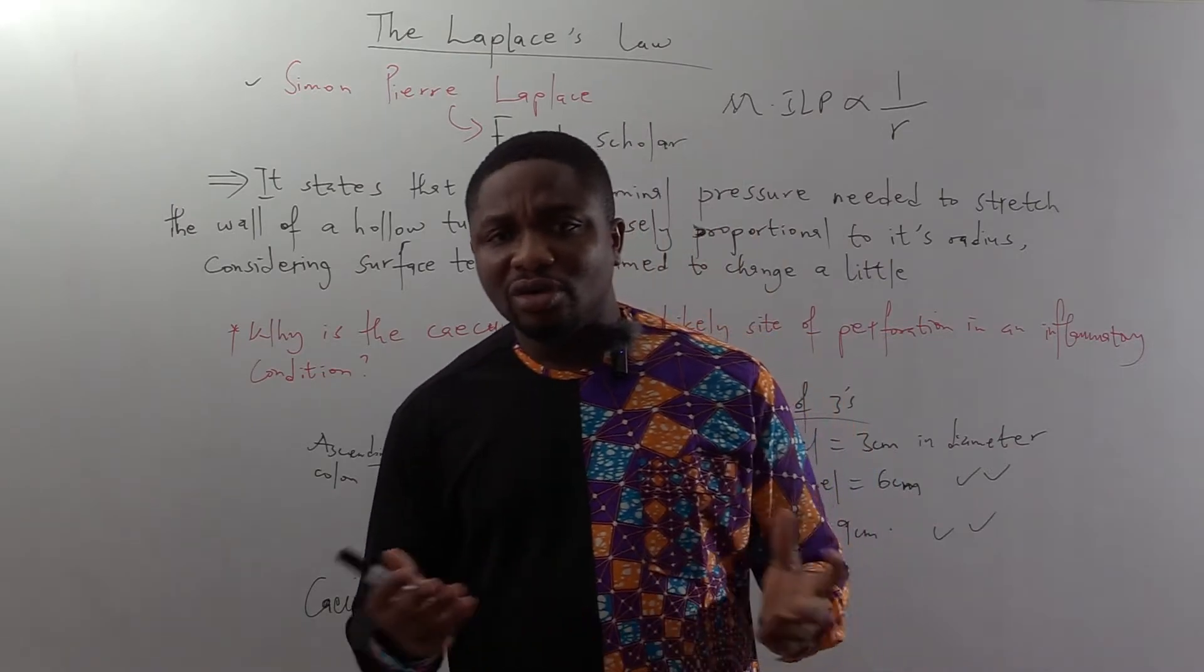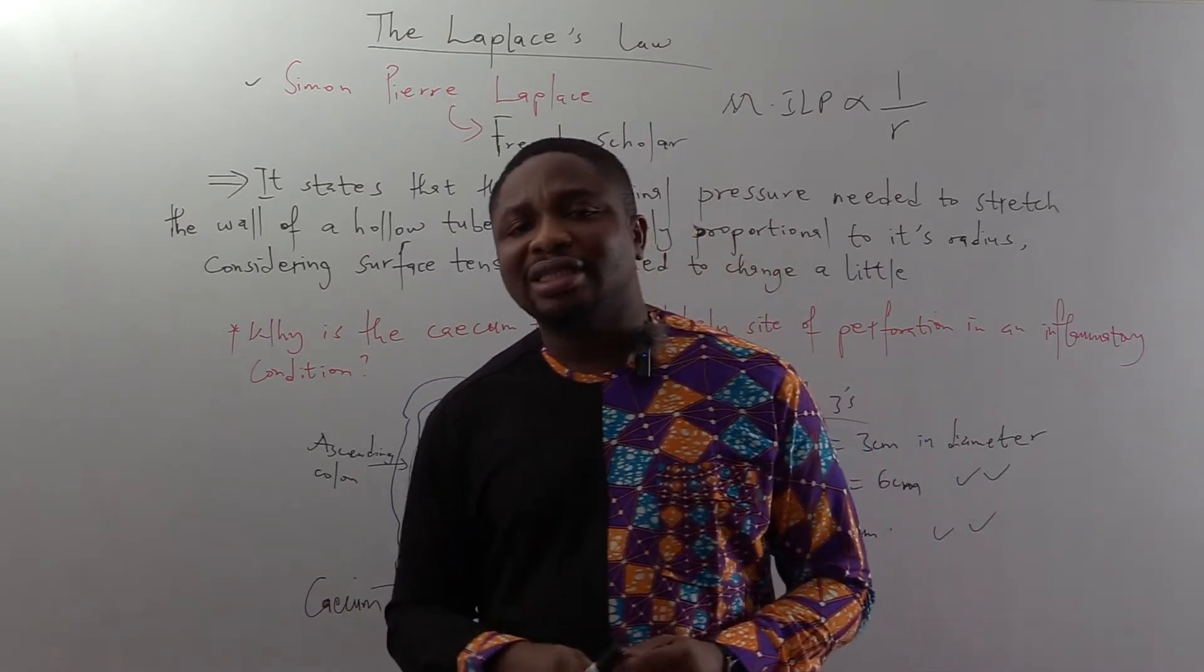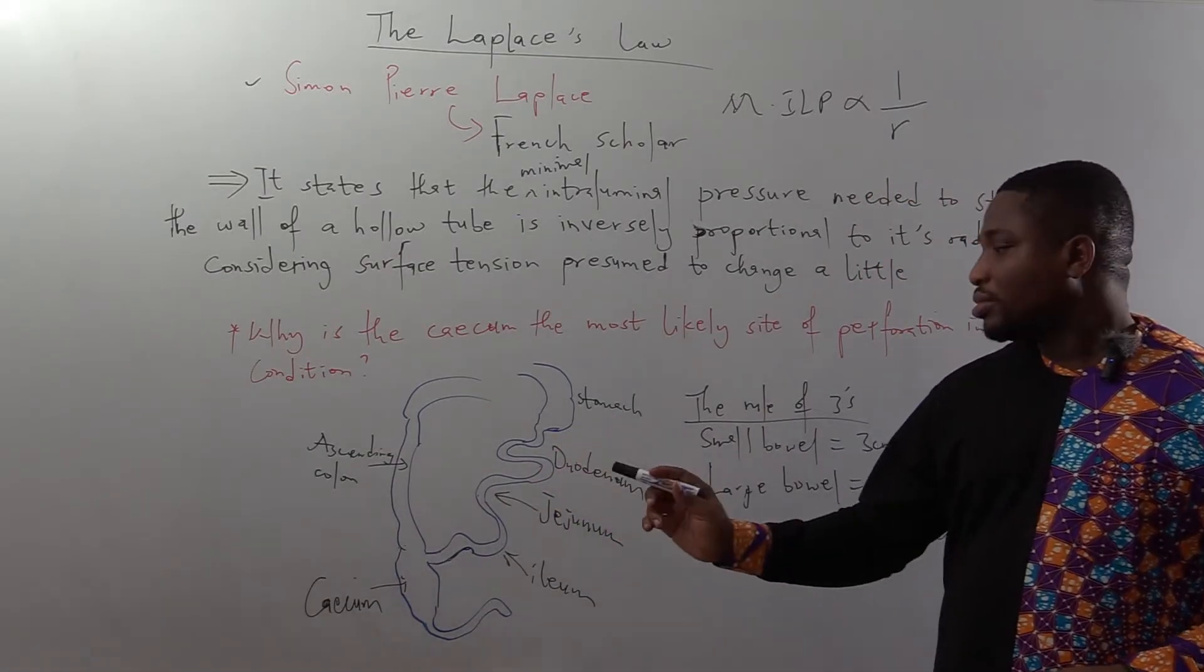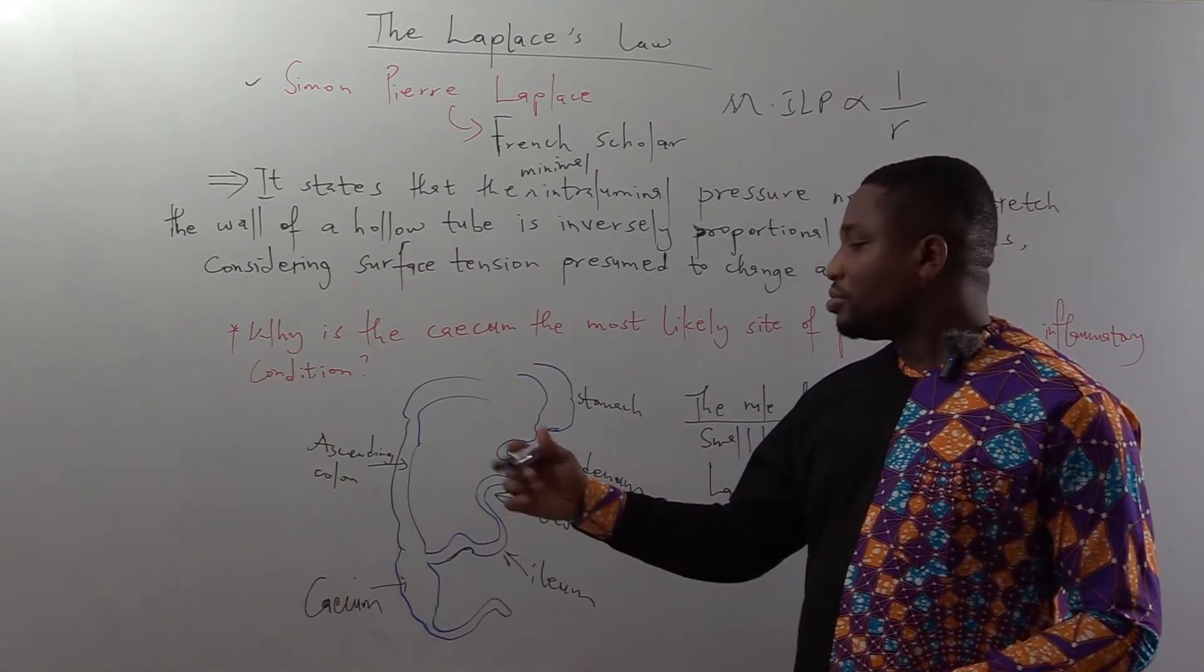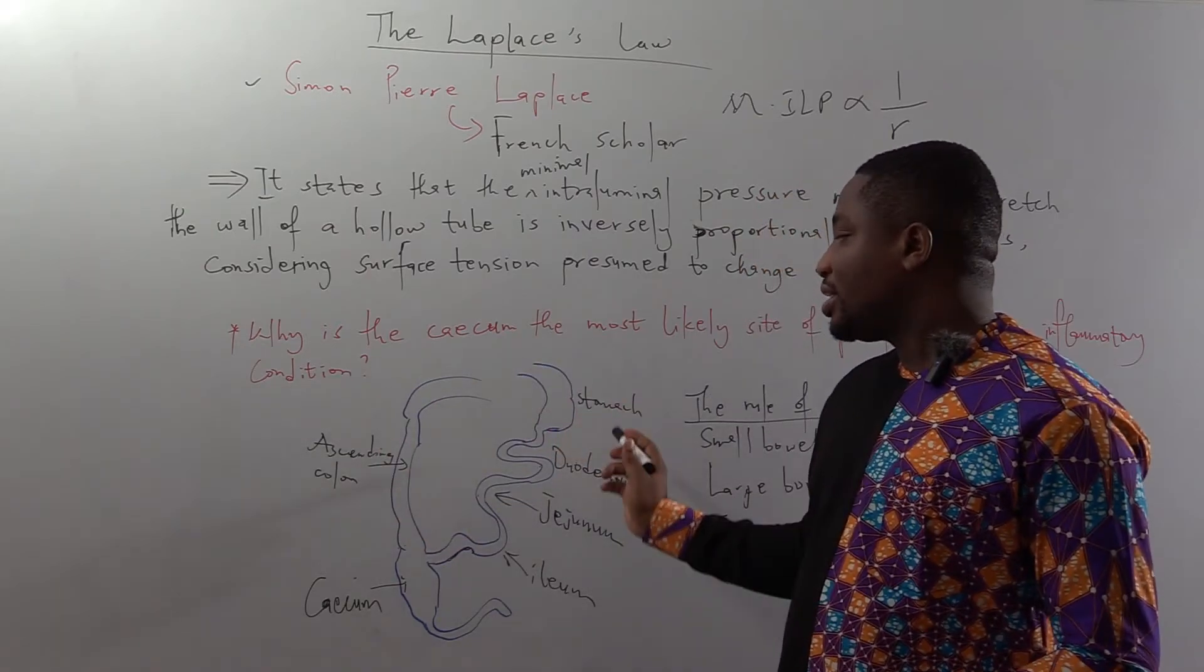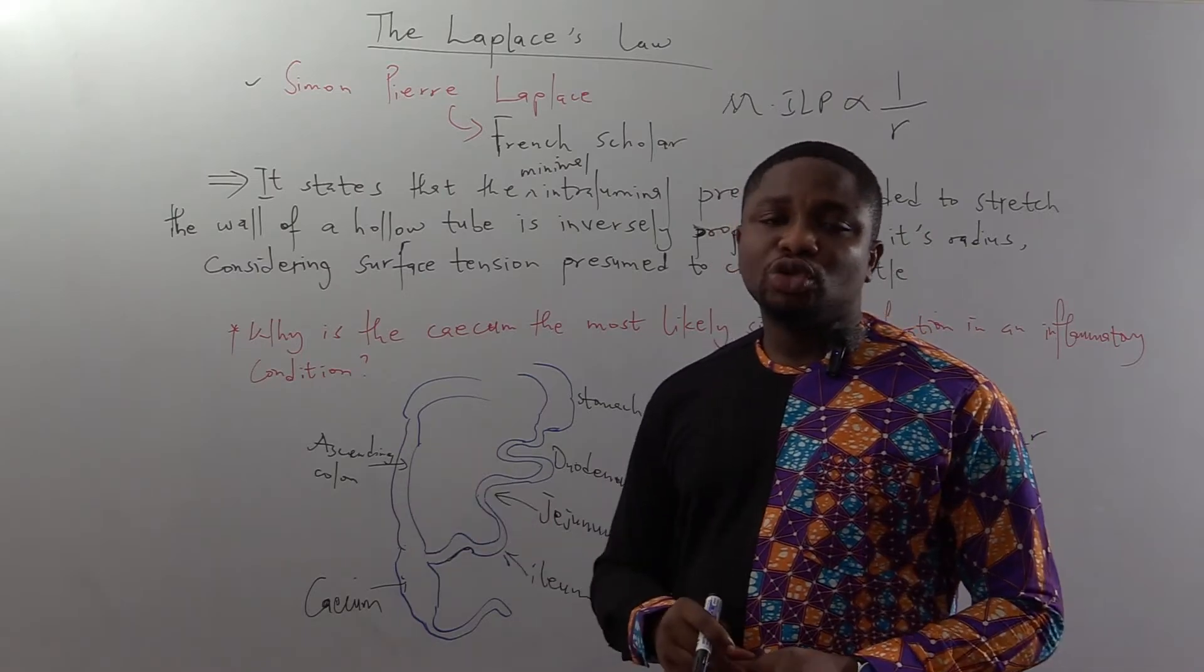Now, if you look at the cecum, it is part of the bowel. If you take the bowel from the stomach, that is the duodenum, coming to the jejunum, coming to the ileum, going to the cecum, you have the appendix here, and ascending colon, transverse colon, descending, sigmoid colon, rectum, and the anus.